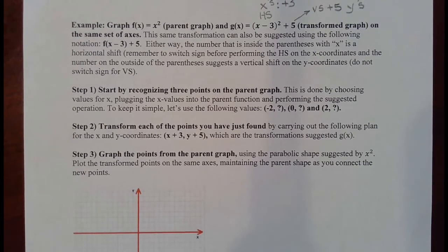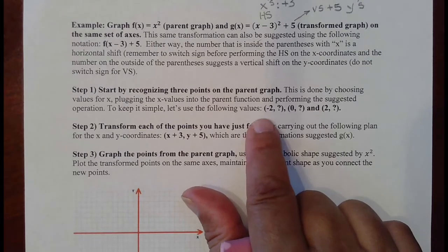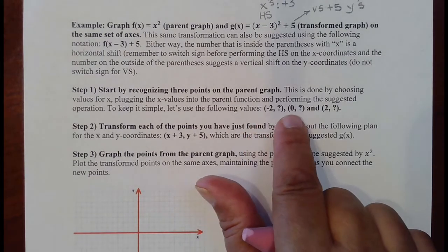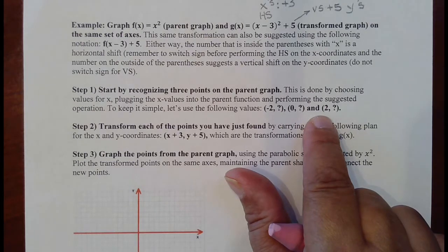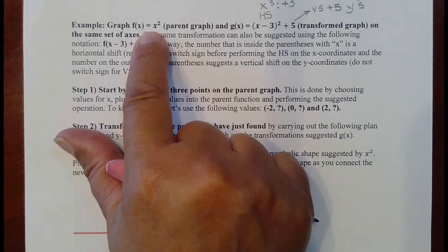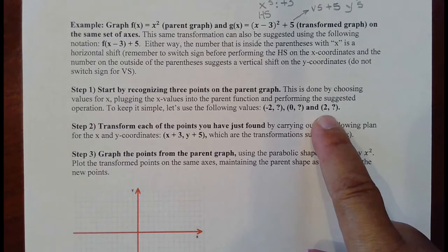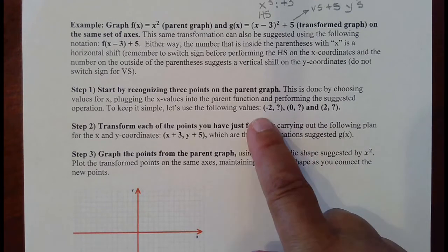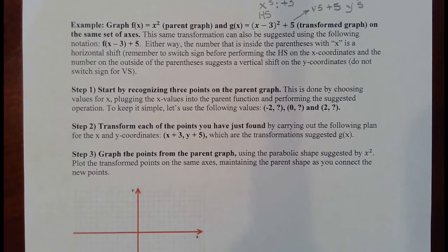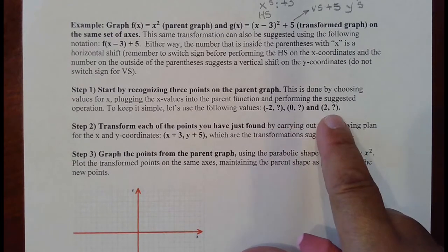For this function the domain is all real numbers, so you can pick whatever you want. I've chosen negative two and its positive counterpart, so those create two mirror images and make a nice symmetric parabola shape, and I've also picked zero as a number in between. The Y partners that go with them are something for you to carry out, continuing to practice plugging an X value into a function.